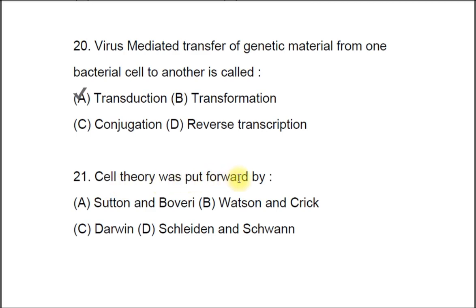Question 21: Cell theory was put forward by A) Sutton and Boveri, B) Watson and Crick, C) Darwin, D) Schleiden and Schwann. The correct answer is D, Schleiden and Schwann.